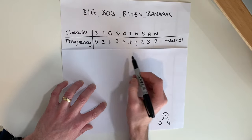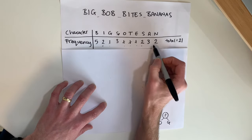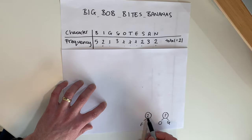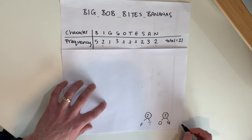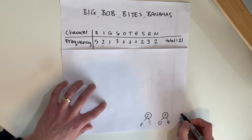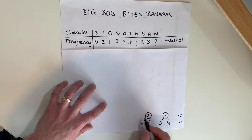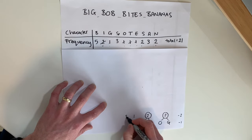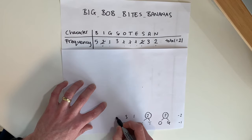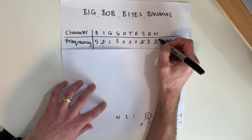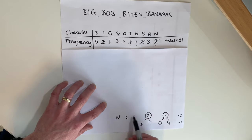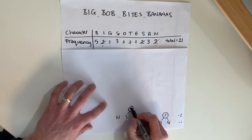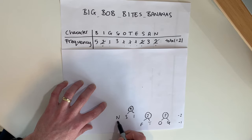Now I move on to the next level of frequencies: I, S, and N, all of which have a frequency of two. I write these physically higher up in the hierarchy. Starting from the right, I pair S and I together for a combined total of four. N is left unpaired for now because I haven't got anything to pair it with.